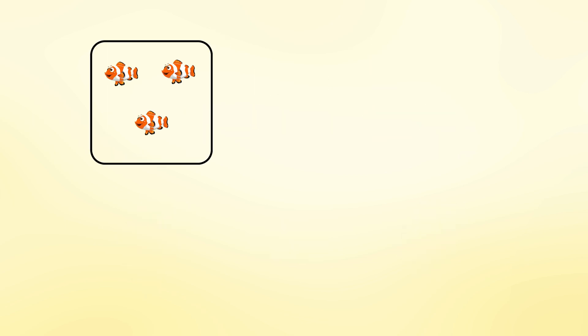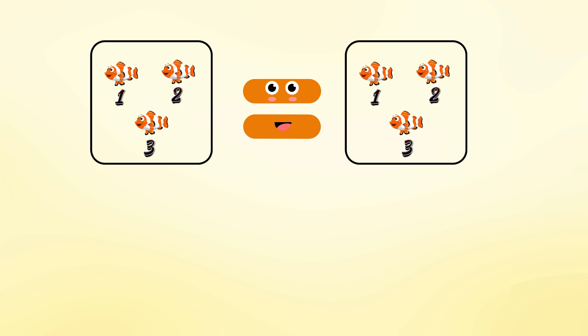We have one basket of fish. Let's count 1, 2, 3. Now we have another basket of fish. Let's count 1, 2, 3. They are the same. So, 3 equals 3.